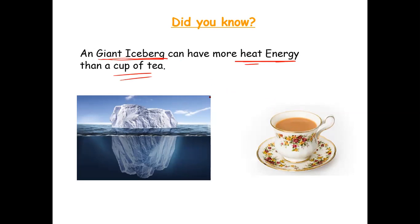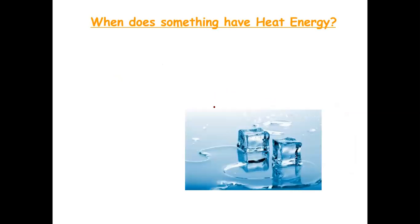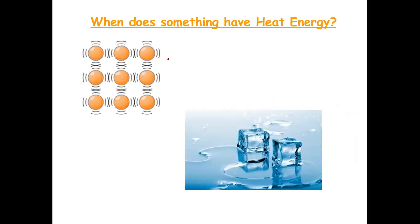It has to do with what heat energy actually is. If we looked at a cube of ice at a molecular level and looked at all its atoms, we notice they're vibrating. All particles are constantly vibrating and moving. In a solid like an ice cube, the particles are arranged in a lattice and they're all vibrating back and forth about a fixed point.